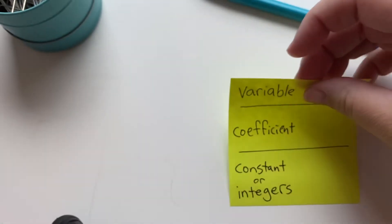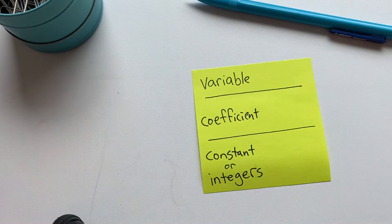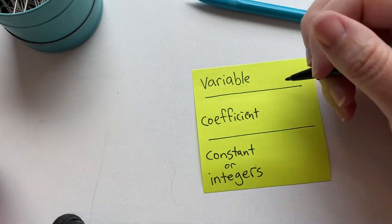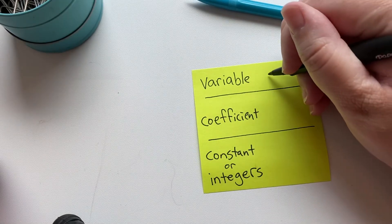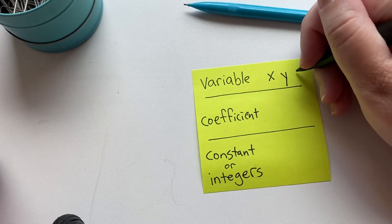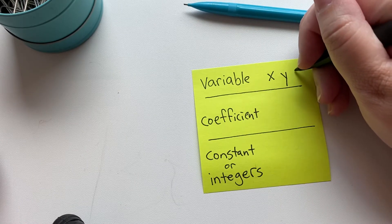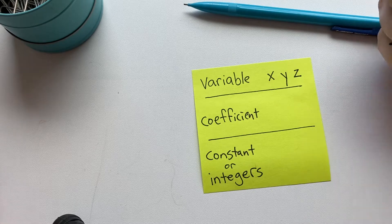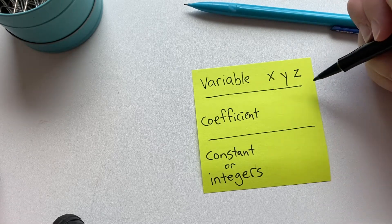First of all, we're going to be working with different kinds of terms. We have variables and those are represented by letters like x or y or it could be any letter z, a, r and they are unknown values.